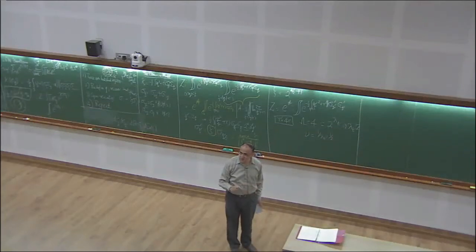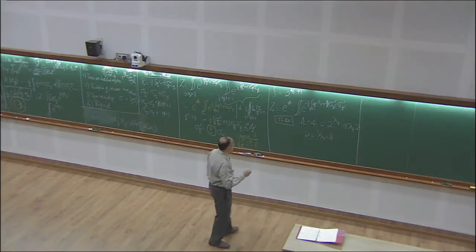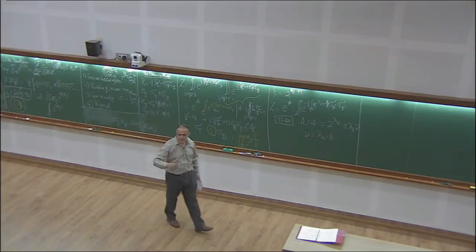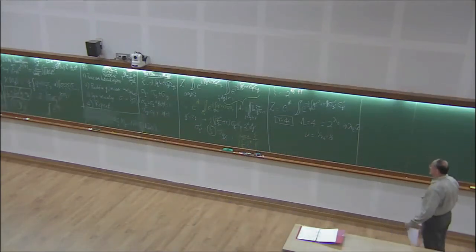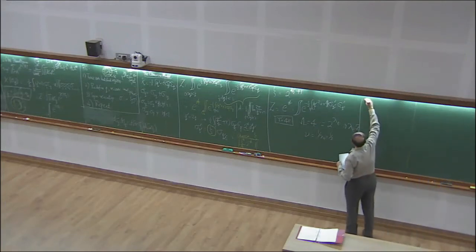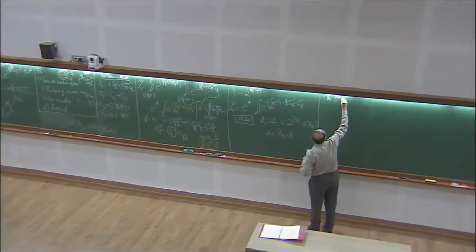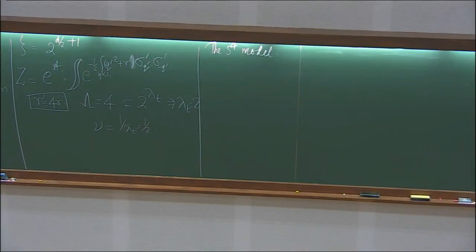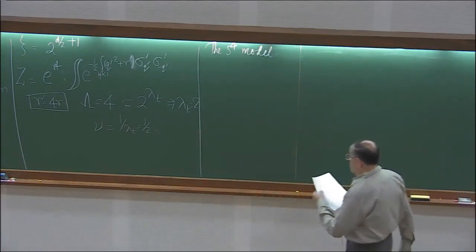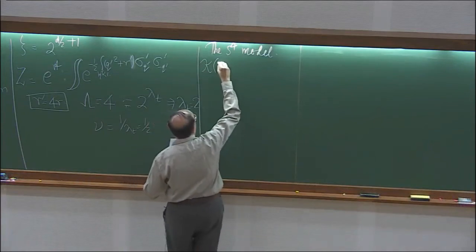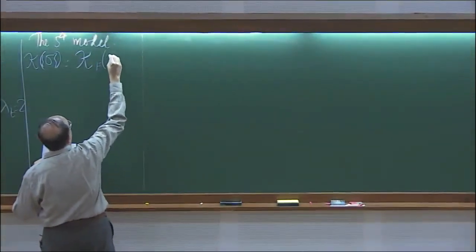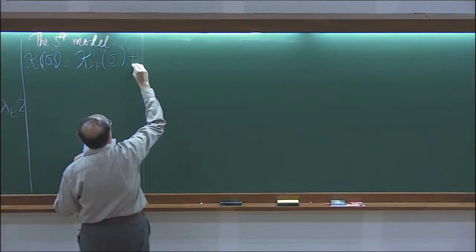Now we come to the next part: the S-fourth model. The S-fourth model is actually written in terms of the sigmas. The first thing we do is split K, which is a function of all the sigmas, into two parts: a free part K_f and an interacting part K_i. The U term is K_i.